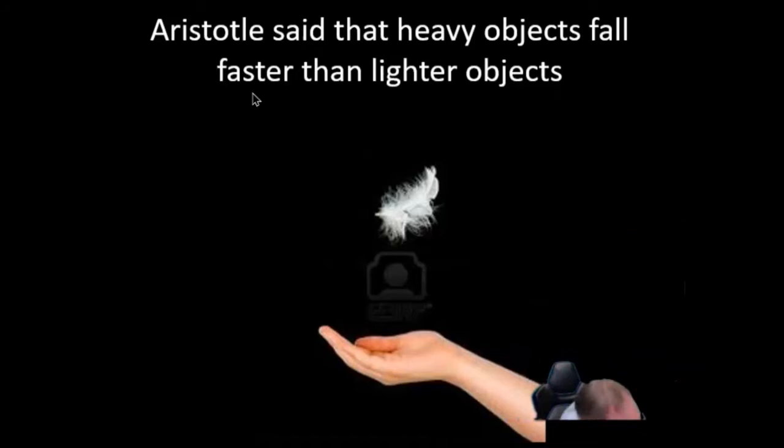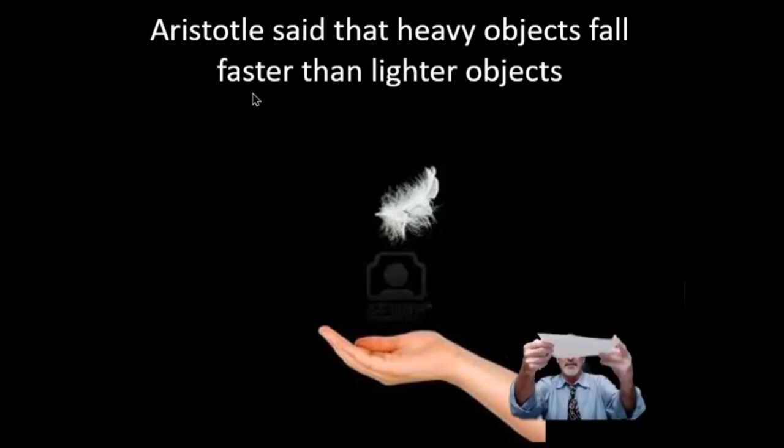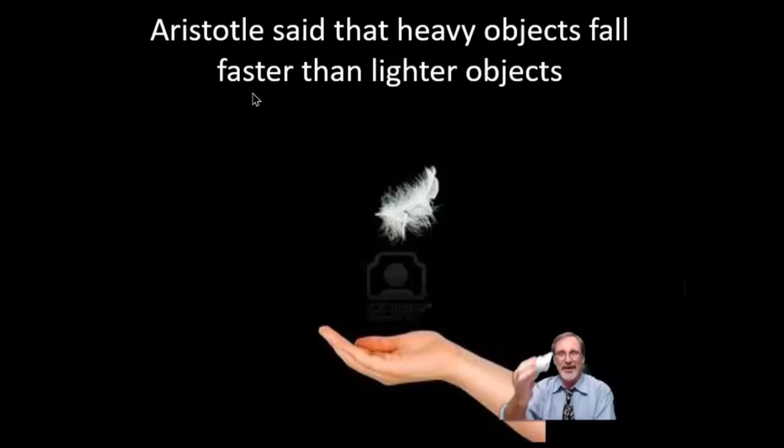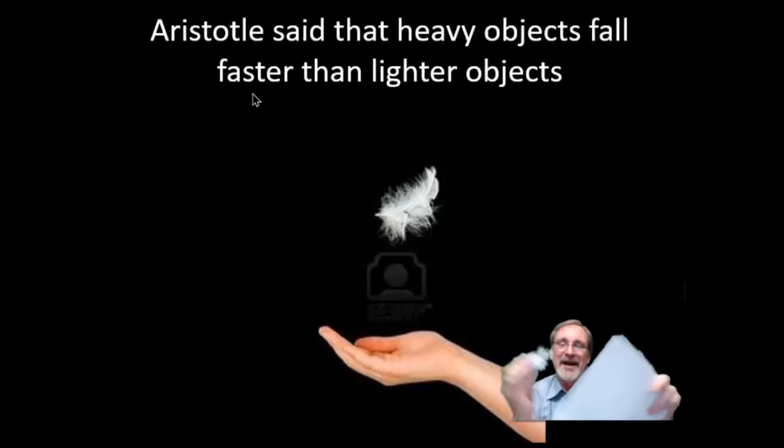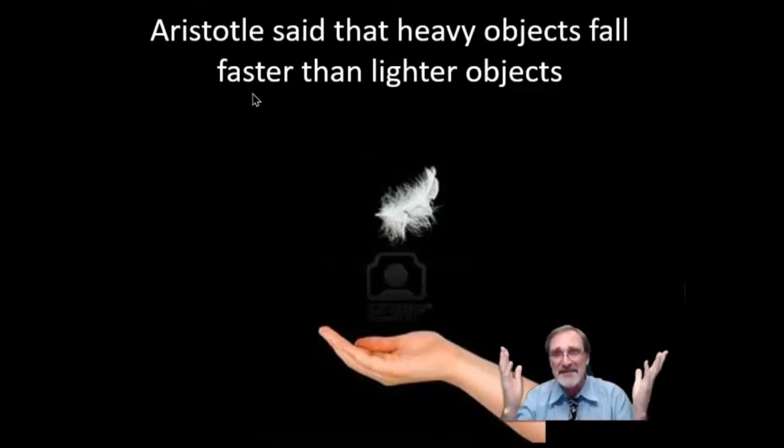But what's being left out of this whole situation? If you have two pieces of paper and you crumple it up, what happens? Yeah, the one that's crumpled falls faster. Well, it doesn't weigh more, does it? Anyway, I'm just trying to show you the whole idea of heavy things falling faster than lighter things. It makes sense, but it's not really the way it works.